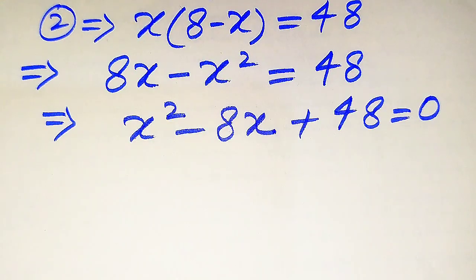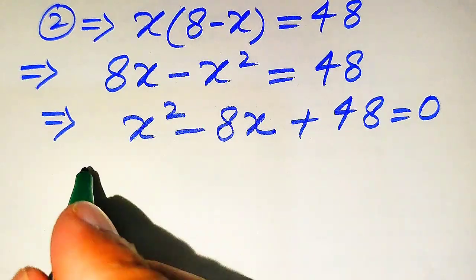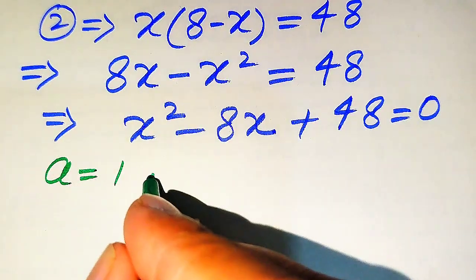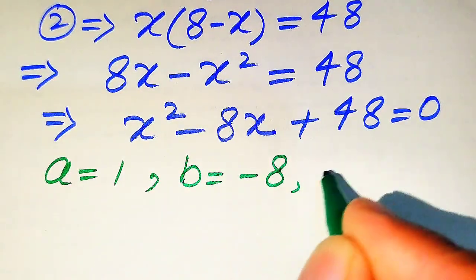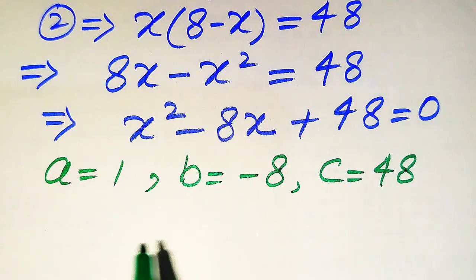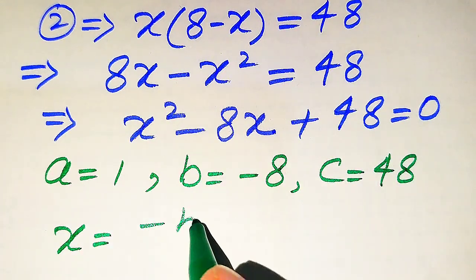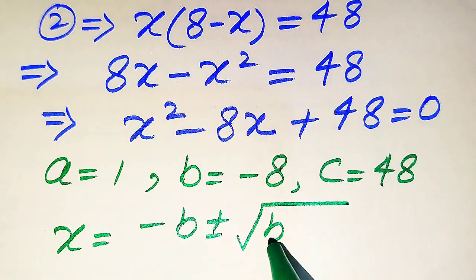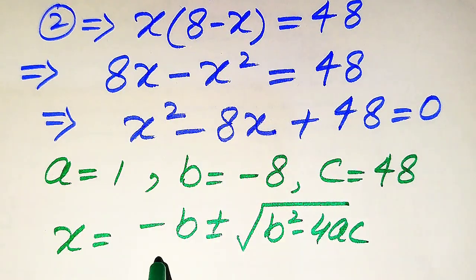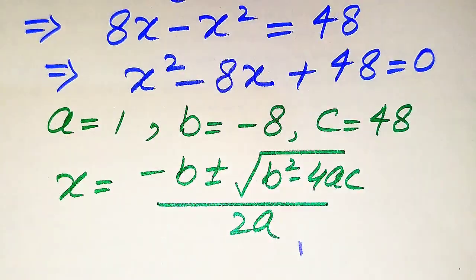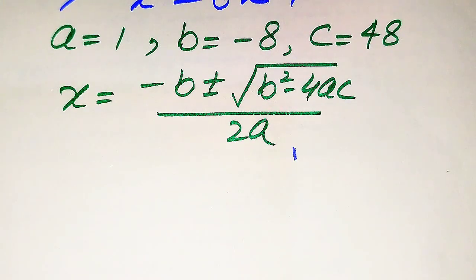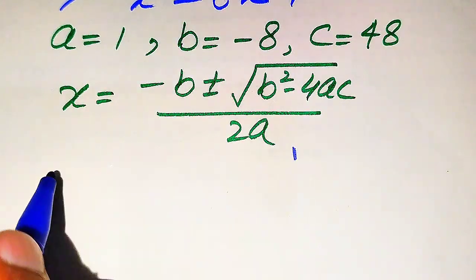Now there are three methods to solve the quadratic equation: one is the factorization method, the second is completing the square, and the third one is by applying the quadratic formula. Here we solve this quadratic equation using the quadratic formula, so we write the coefficients of this equation. The coefficients are a equals to 1, b equals to minus 8, and c equals to 48. The quadratic formula is x equals to minus b plus minus square root of b squared minus 4ac, divided by 2a.